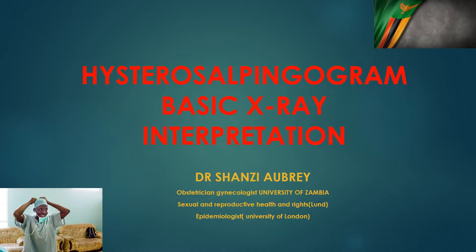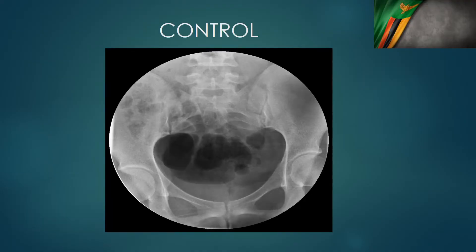Let's look at the images and have a basic understanding of them. As we already discussed in the other video, we normally take about four x-rays. One is a control, one is to look at the endometrial cavity, another is to look at the tubal lining and whether there is any blockage. We look at the tubes in the second x-ray, and in the third one we want to see the spill. We start with the control because we must compare the contrast images with the non-contrast images to make correct interpretations — otherwise we might call something a spill which was already there before contrast.